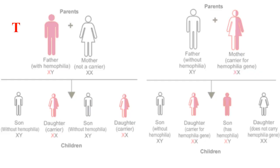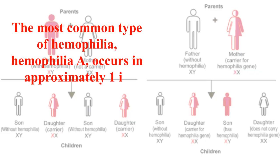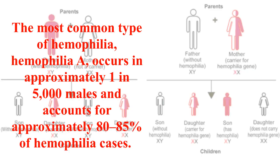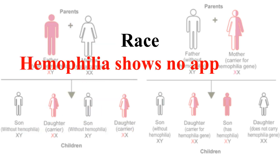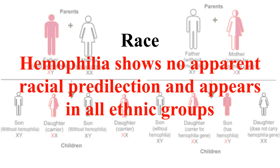The most common type, hemophilia A, occurs in approximately one in 5,000 males and accounts for approximately 80 to 85 percent of hemophilia cases. Hemophilia shows no apparent racial predilection and appears in all ethnic groups.